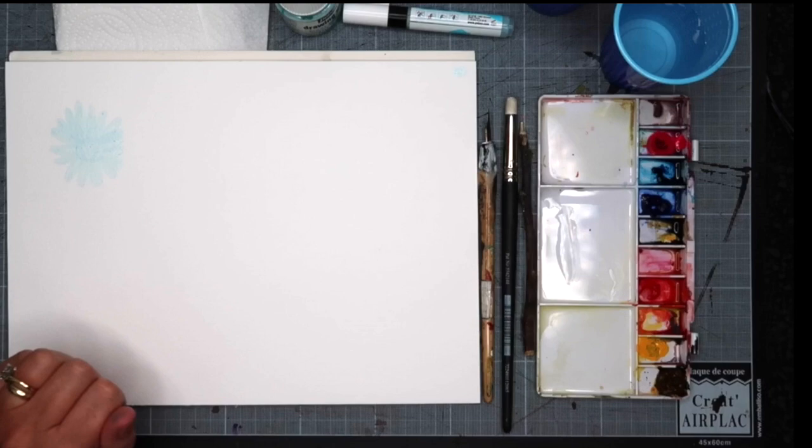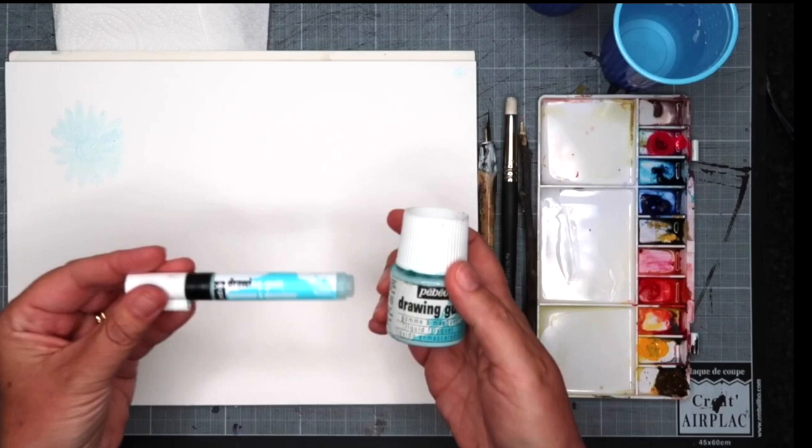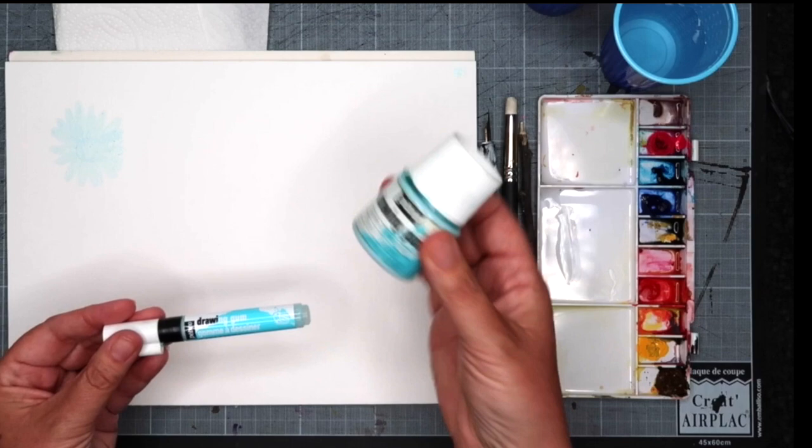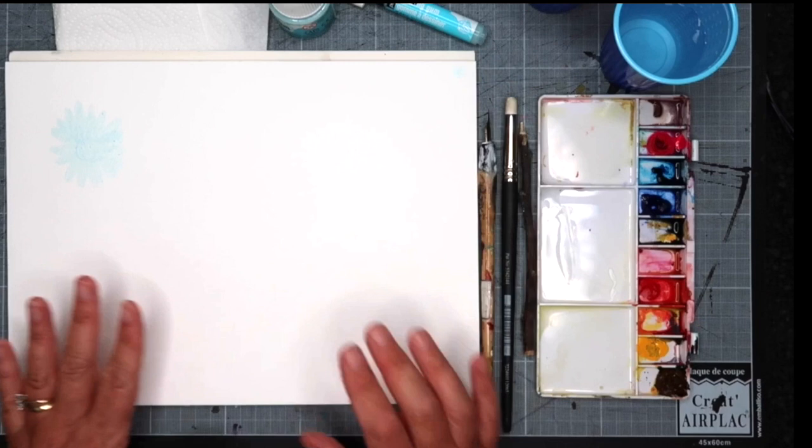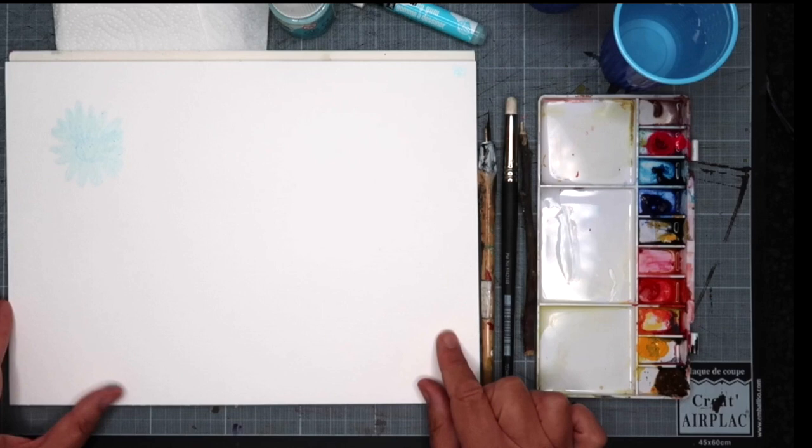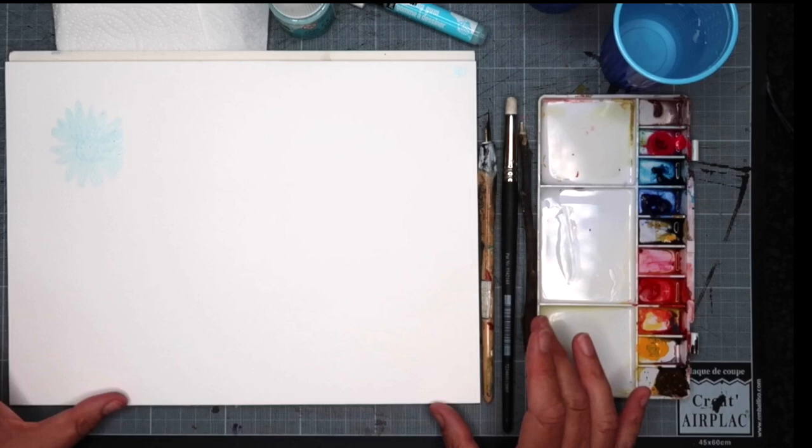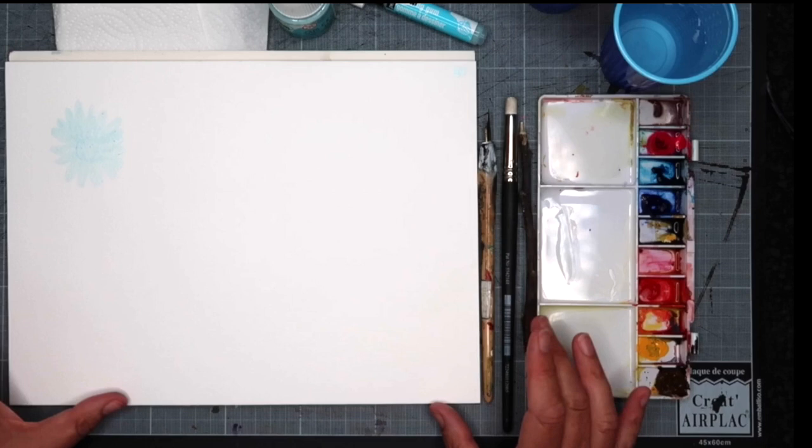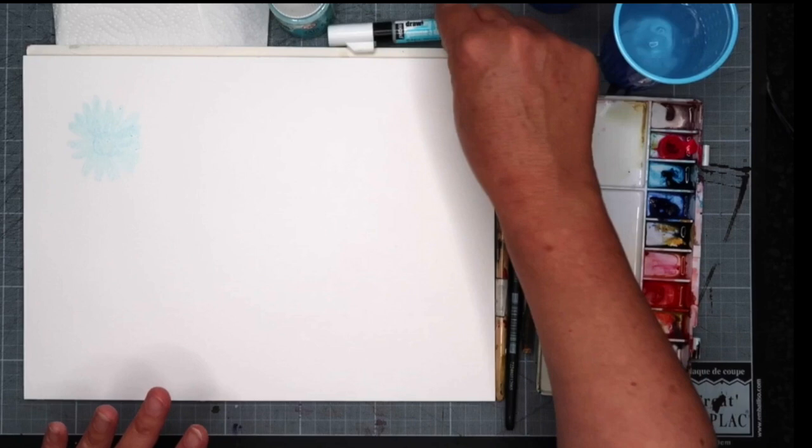There are a couple of downsides. Obviously the amount of masking fluid you get in here compared to the pot per mil is a lot cheaper buying it this way. The other thing is this comes out into a thin layer, and it works really well, but I find it's quite tricky to take it off afterwards. It does come off but it just takes a little bit longer.